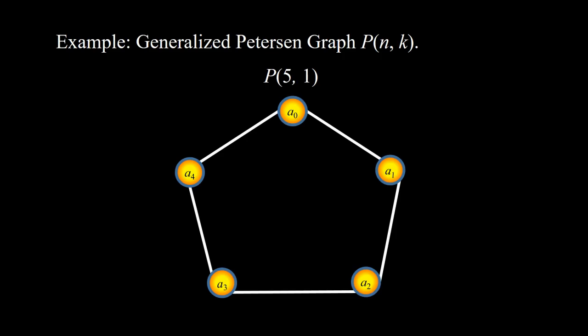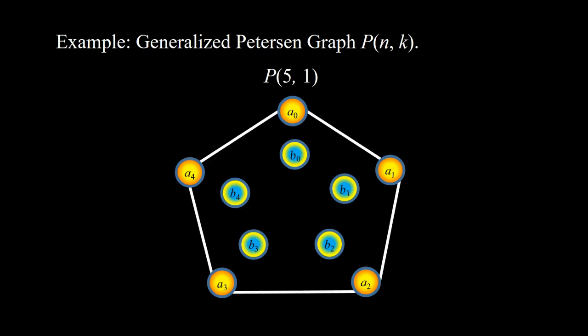Next is P(5,1). Here is the cycle C5. Here are the B vertices, and here are the AB edges. Because K is 1, B0–B1, B1–B2, B2–B3, B3–B4, and B4 goes back to B0.